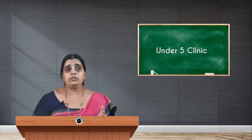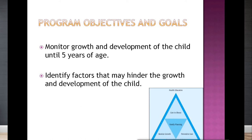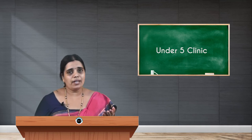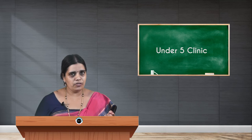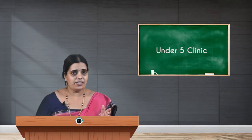The second important program objective is to identify factors that may hinder the growth and development of the child. There are many factors which can hamper a child's growth under five years. As a healthcare service provider in an under-five clinic, it is an opportunity to identify those factors and ensure the child has proper growth and development in the first five years of life.